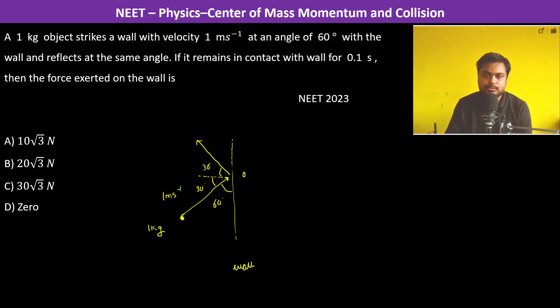in contact with the wall for 0.1 seconds, then the force exerted on the wall. So this is 1 meter per second, this is also 1 meter per second. So p_initial is equal to 1 kg into 1 meter per second.